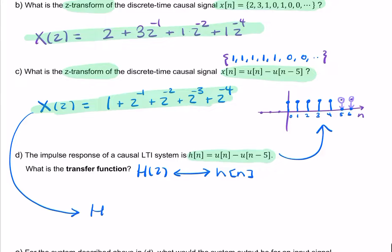So we simply say h of z equals 1 plus z to the minus 1, z to the minus 2, z to the minus 3, and z to the minus 4. So nothing new here. The transfer function is simply the z-transform of the impulse response. And that's exactly what we did in part c.